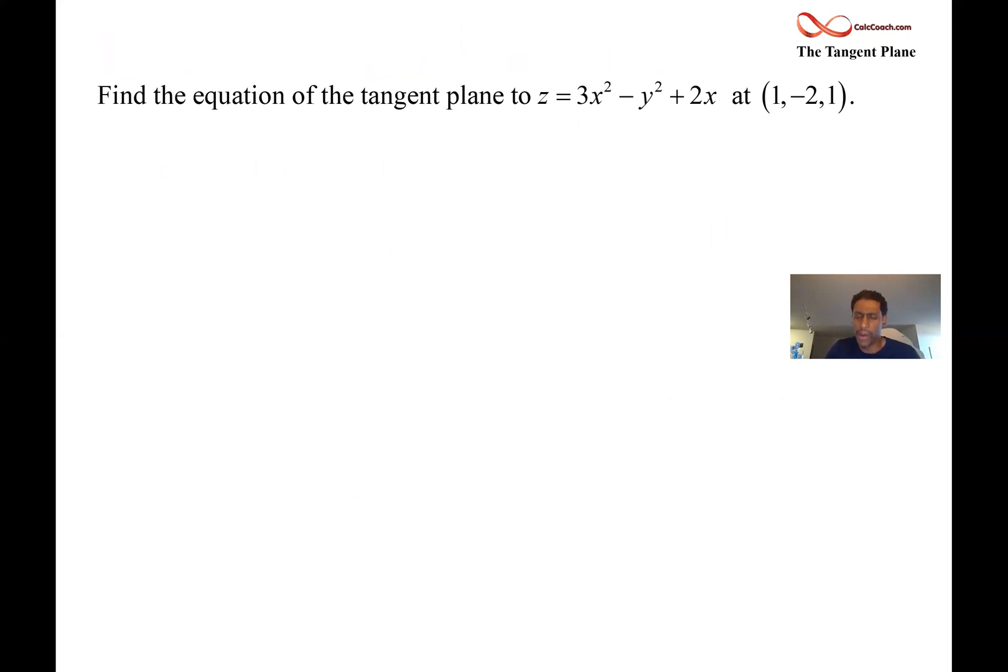So we have our x naught, y naught, z naught. And we just need to take some partials. This is kind of polynomial in nature. So the partial should be straightforward. So what is the partial with respect to x holding y constant? We'll have 6x plus 2.